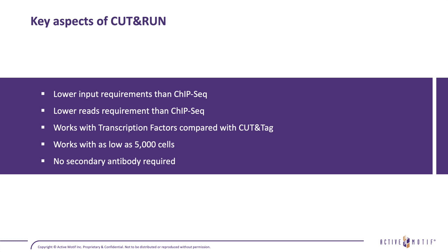Key aspects of CUT&RUN are lower input requirements than ChIP-seq, lower sequencing requirements than ChIP-seq, and critically it works with transcription factors, whereas CUT&TAG is traditionally used for histone marks. Additionally, CUT&RUN can go down to as few as 5,000 cells for certain marks.